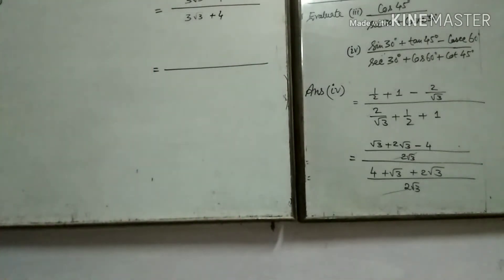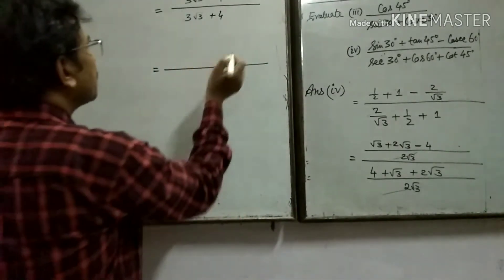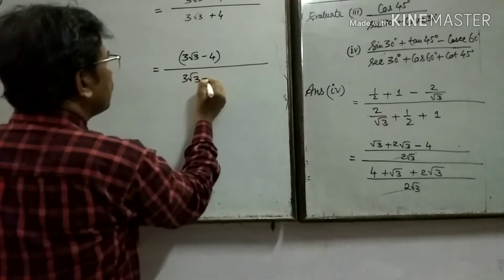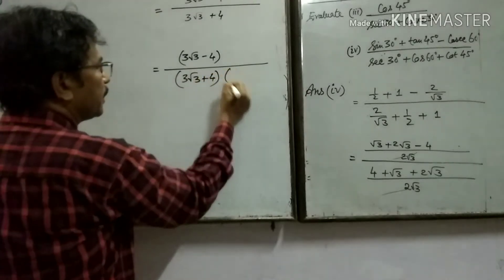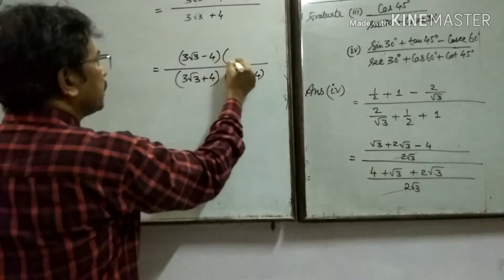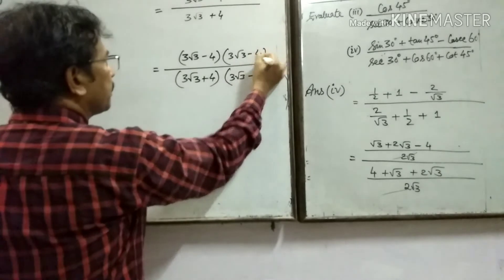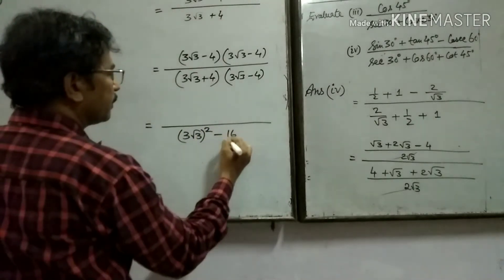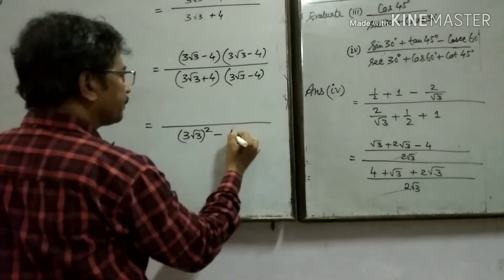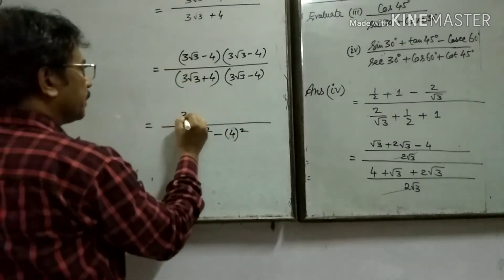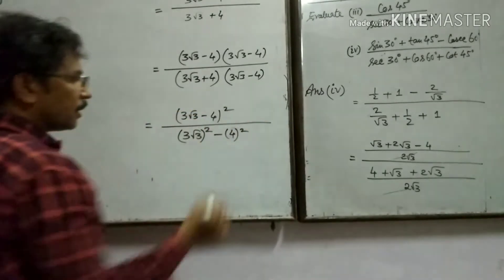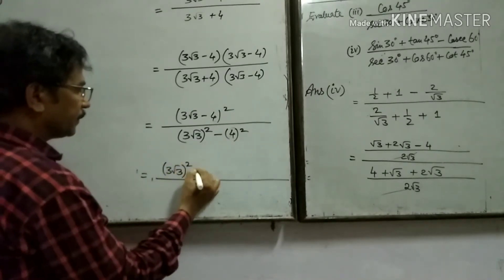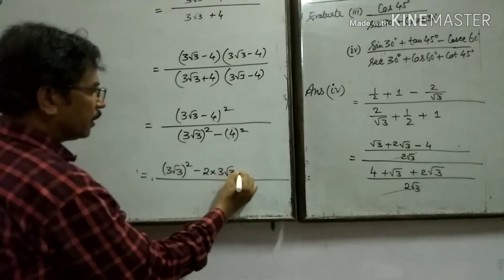3 root 3 minus 4. Now we have to make a reference. The reference is 3. 3 root 3 minus 4. This will be 3 root 3 minus 4, times 3 root 3 plus 4. Now we have to make a reference. 3 root 3 minus 4. This will be 3 root 3 plus 4. This will be 3 root 3 plus 4, minus 2 into 3 root 3, into 4.